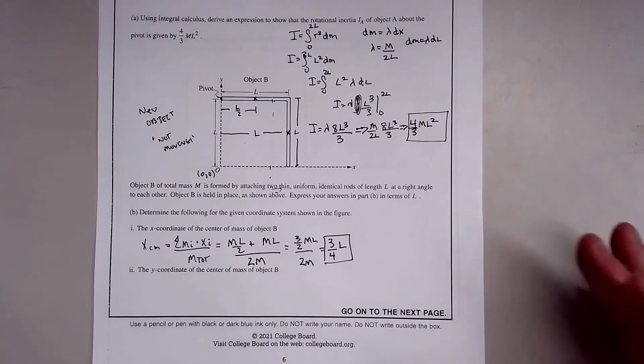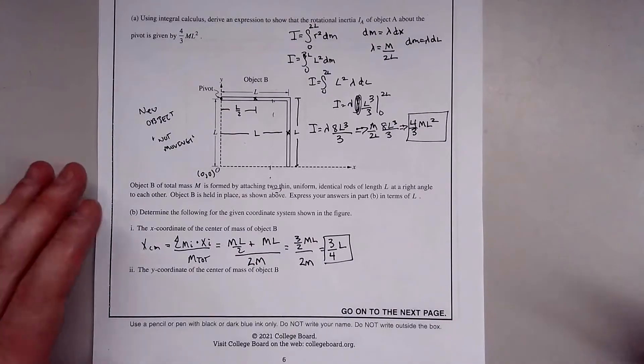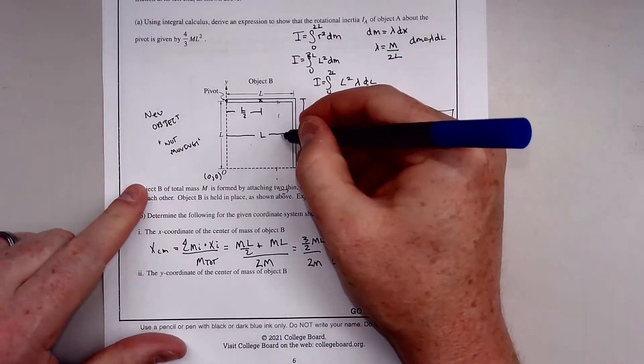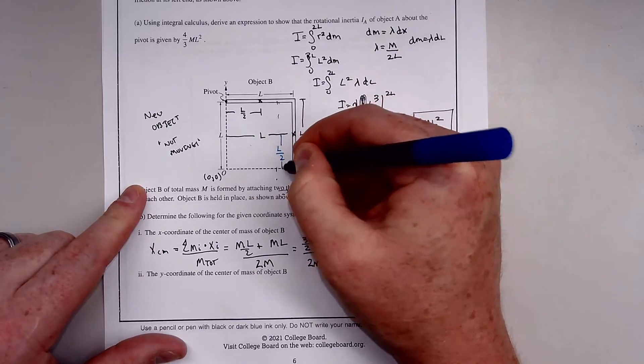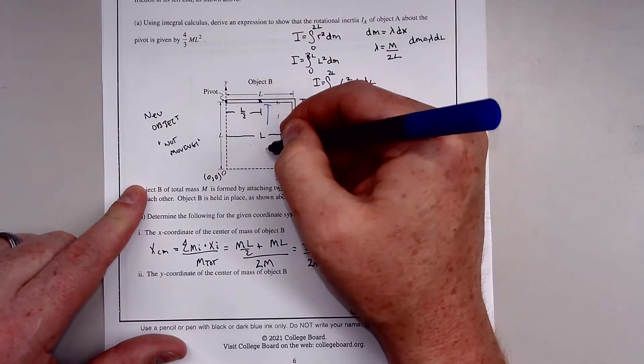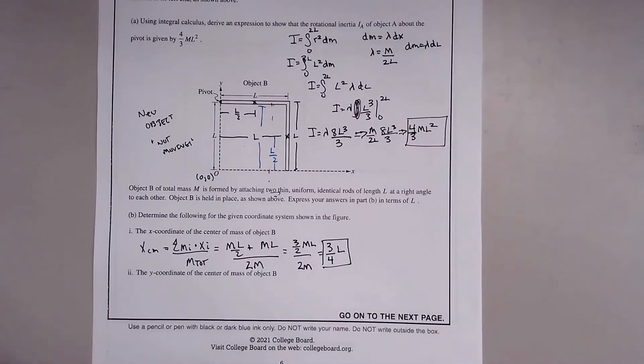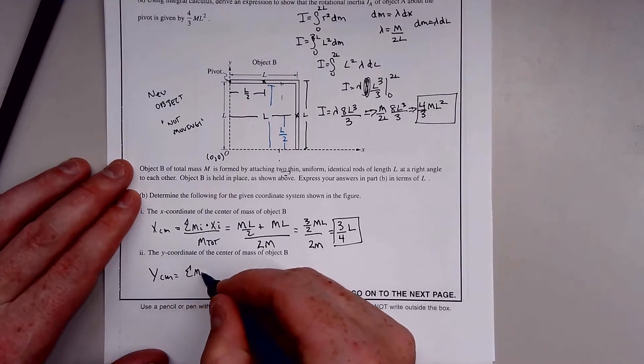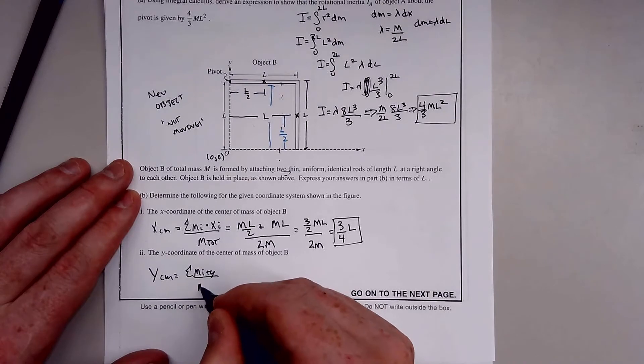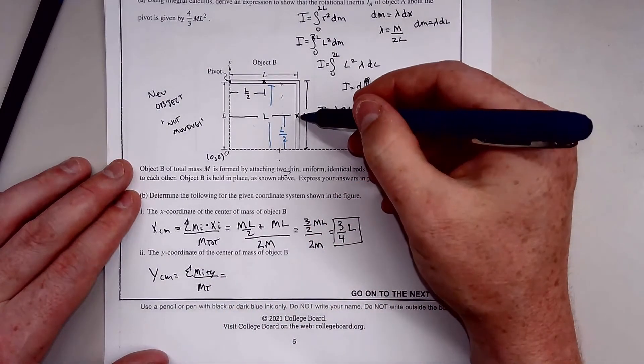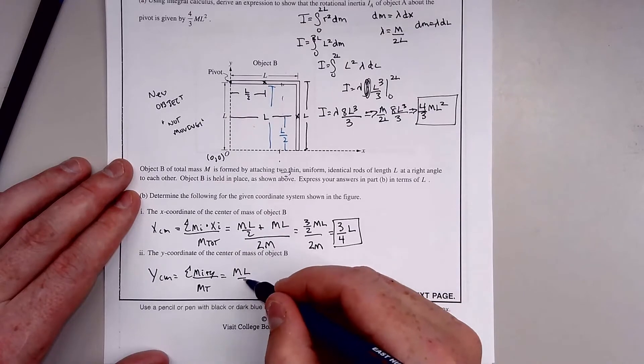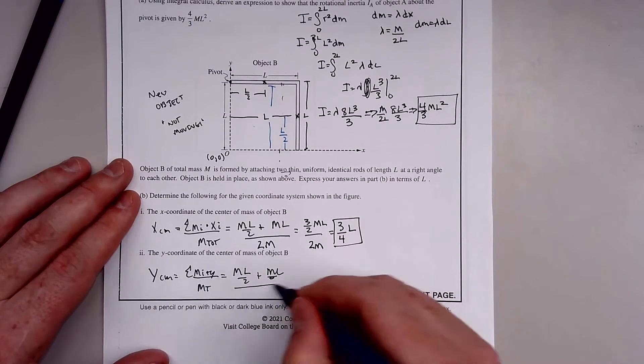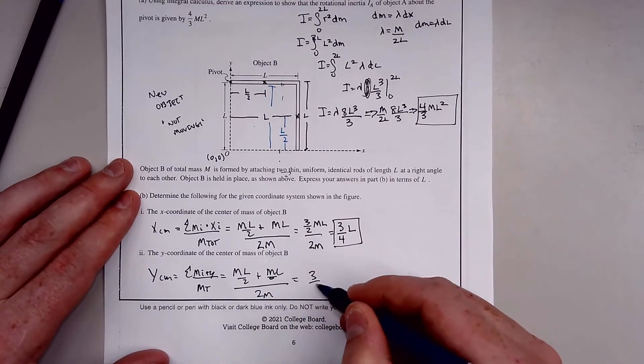Now for the y-coordinate. Since this object's not moving, we can treat it like a stationary object. The center of mass for the horizontal rod has height L/2, and the vertical rod has height L. The y-coordinate calculation is actually going to be the same.